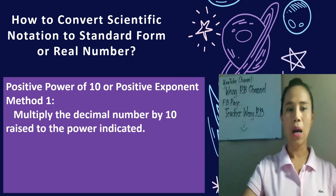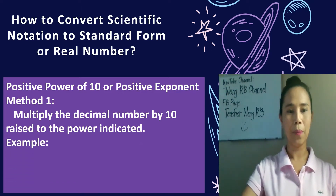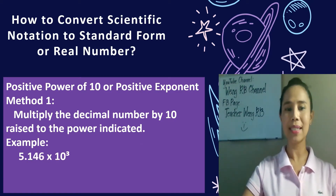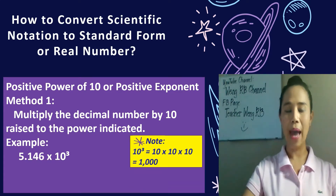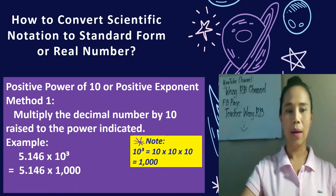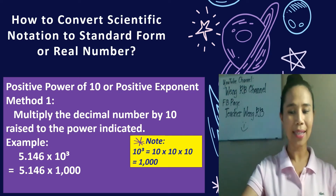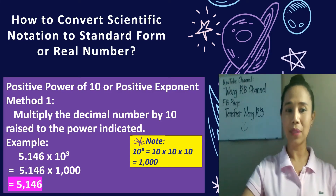Method 1: We can multiply the decimal number by 10 raised to the power indicated. For example, we have 5.146 times 10 to the third. Note that 10 to the third is equal to 10 times 10 times 10, so that means it is equal to 1000. This would mean you have to multiply 5.146 times 1000, and we'll get 5146. So that's the first method.